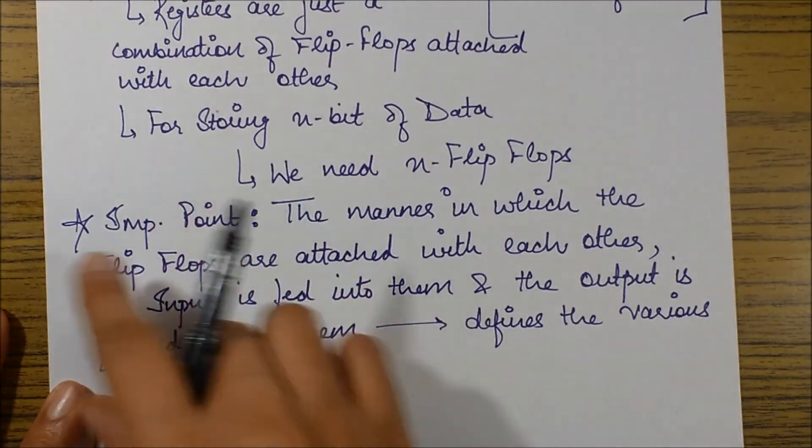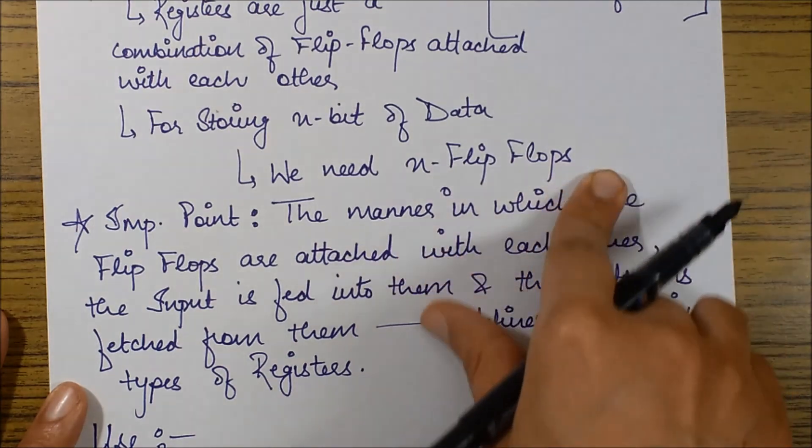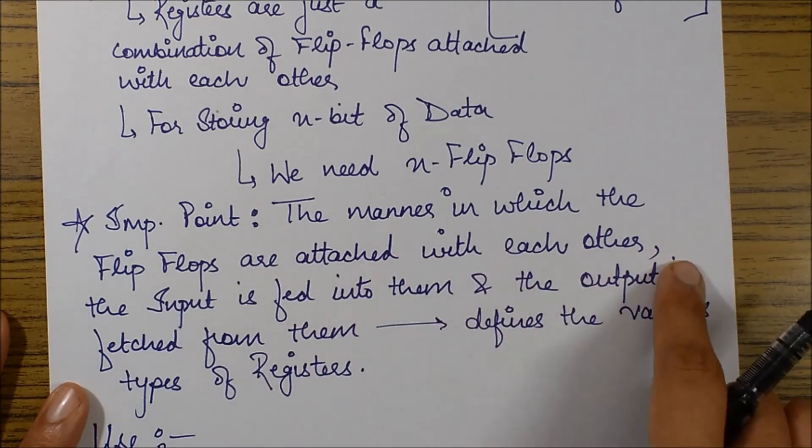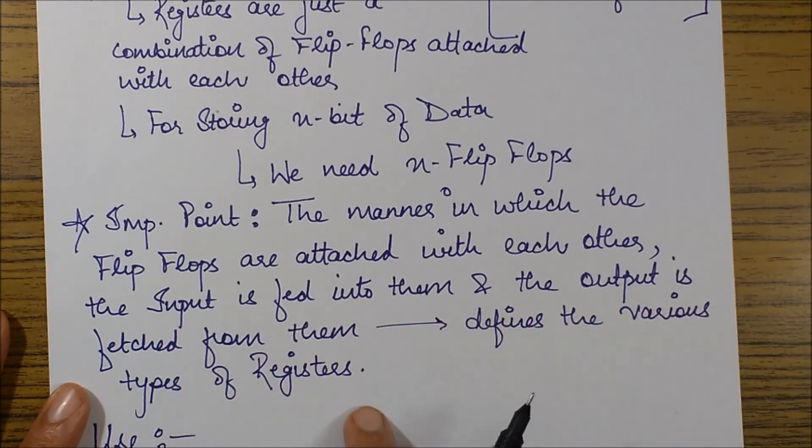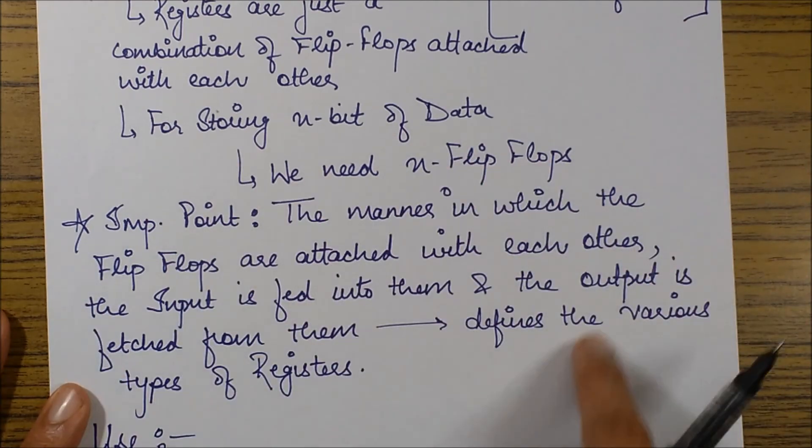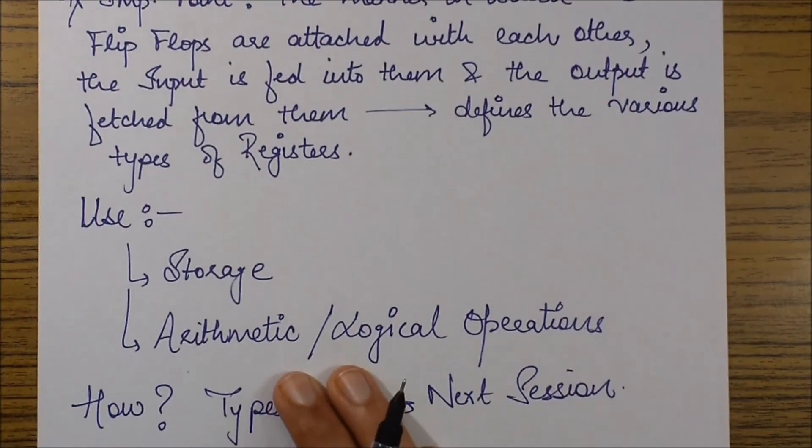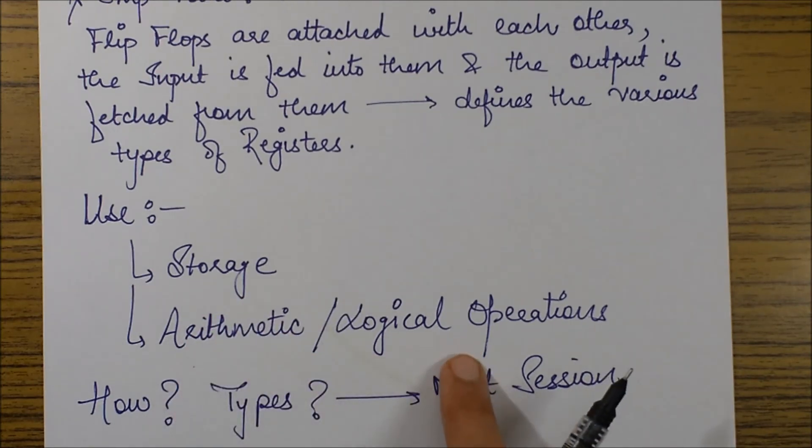First of all, what we are clear with right now is that for storing n bit of data, I'll be needing n flip-flops. The manner in which the flip-flops are attached with each other, the input is fed into them, and the output is fetched from them defines the various types of registers. This we'll cover in the further details when we'll get to know about the registers and the usage. As of now, usage is for storage and to calculate arithmetic or logical operations.